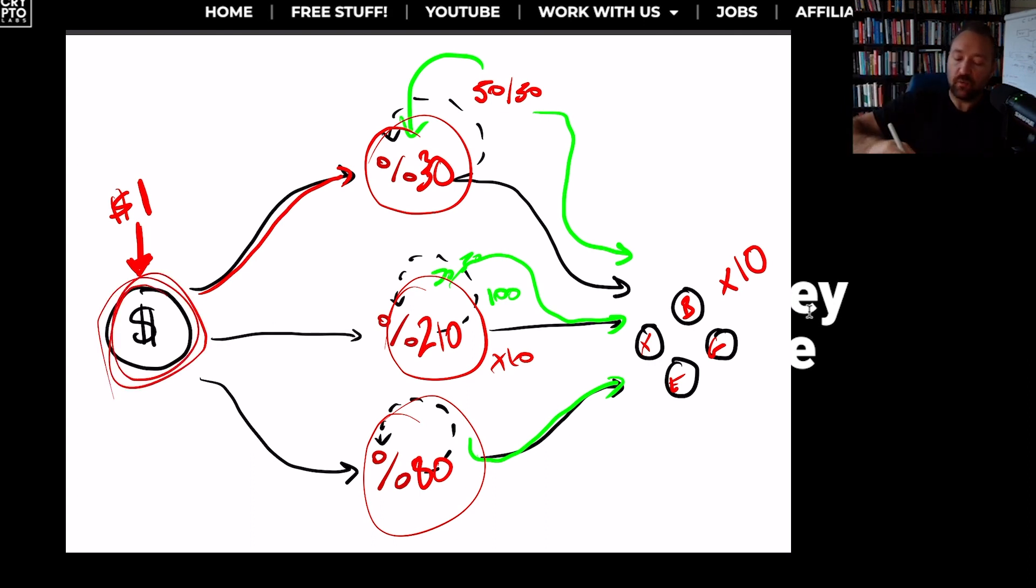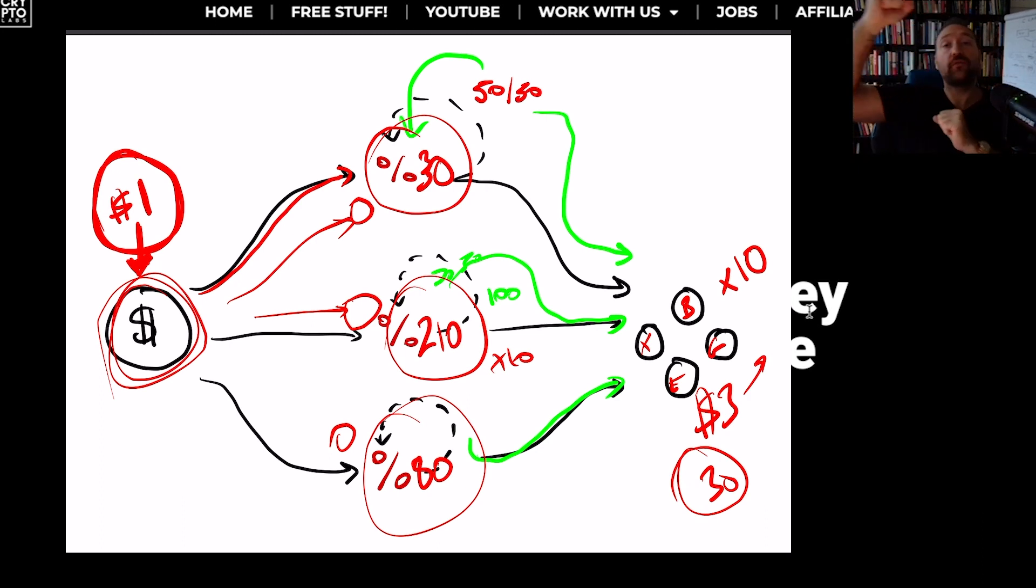What if we really thought in terms of leverage? How could I deploy $1? And of course, you're not going to deploy just $1, but you get the point. I'm going to deploy 20 cents here, I'm going to deploy 30 cents here, and I'm going to deploy 40 cents here. And on the back end of that, I'm going to turn $1 into $3. And then I'm going to put that $3 in here to turn that into 30. So you have turned $1 into 30. Does that make sense?